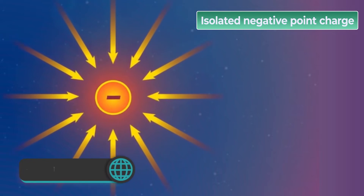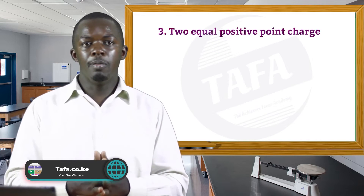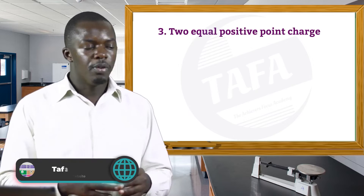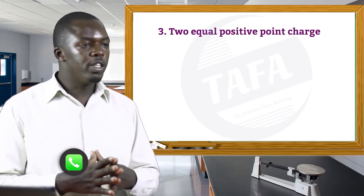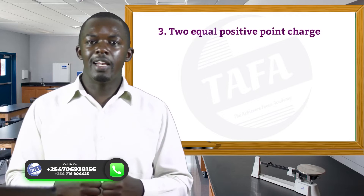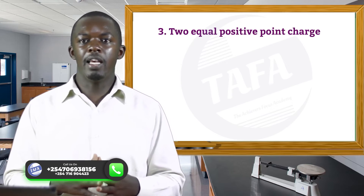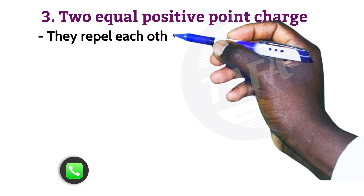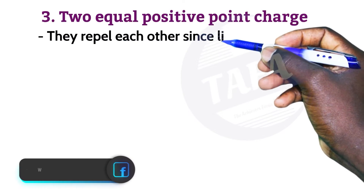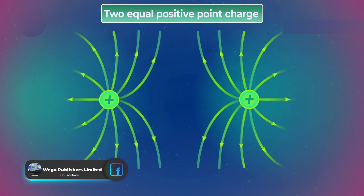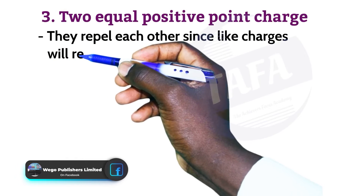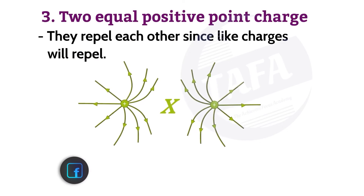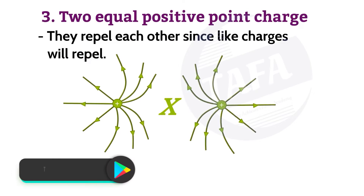The third field pattern is two equal positive point charges. When there are two positive point charges, they are like charges. From electrostatics, we learned that like charges repel each other. So the two equal positive point charges will repel each other since like charges repel.